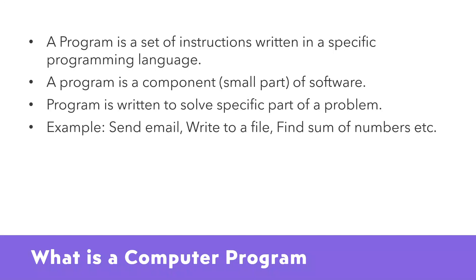A program is a component or small part of a software, written to solve a specific part of a problem. For example, if in a particular website I have so many features, I can create small programs for each. If I want to send an email I can create a basic program to send an email and reuse it throughout the application. If I want to write to a file, I can write a program for that. Find the sum of numbers — I can create a program for that feature. If you want to be a software developer you must know how to write a program. The program is the base of any software, and to write a program we need a programming language. C# is one of them.